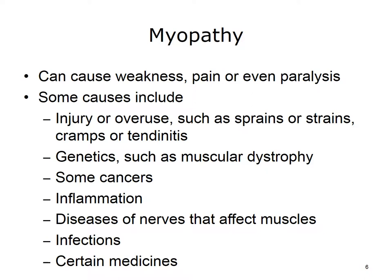Supportive and symptomatic treatment may be the only treatment available or necessary for some disorders. For example, a minor ankle sprain may require applications of ice and restricted activity. Treatment for other disorders may include drug therapy such as immunosuppressives, physical therapy, bracing to support weakened muscles, and surgery. The prognosis for individuals with a myopathy varies. Some individuals have a normal lifespan and little or no disability. For others, however, the disorder may be progressive, severely disabling, life-threatening, or fatal.